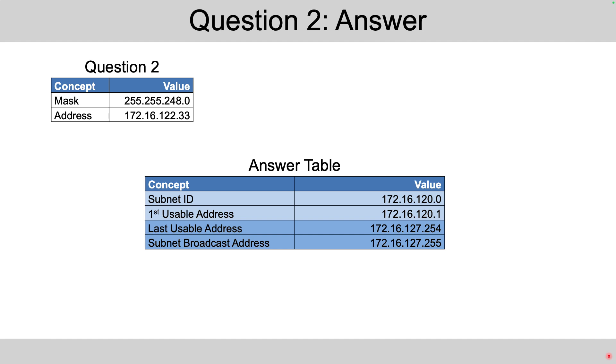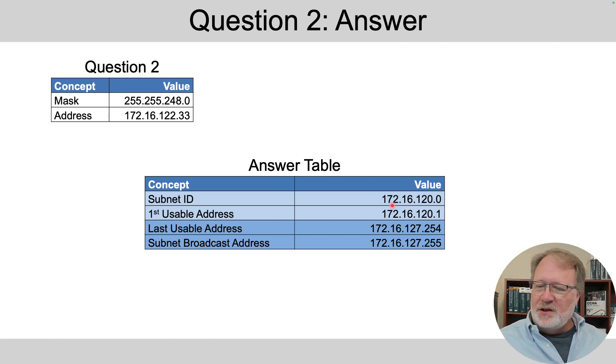Here are the answers for question two. In this case, the address was 172.16.122.33. Here's our subnet ID and the rest of the values. You can take a moment and check that. If you're happy with it, you can skip around to the next section and check your answer there. But if you'd like to see how I found the answers, just keep rolling.